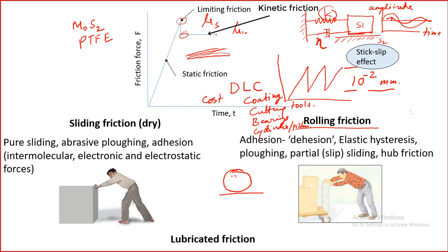When dealing with rolling friction, you have one solid — in the form of a sphere or cylinder — that rolls on a second body. This friction is very very low compared to sliding friction because there is very little energy dissipation. As friction is a result of energy dissipation, the energy dissipation is extremely low here because the actions happening do not involve any kind of plastic deformation.